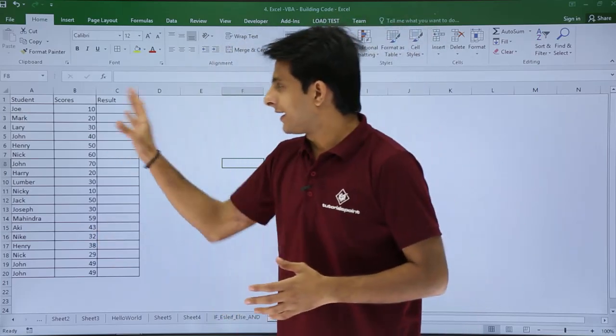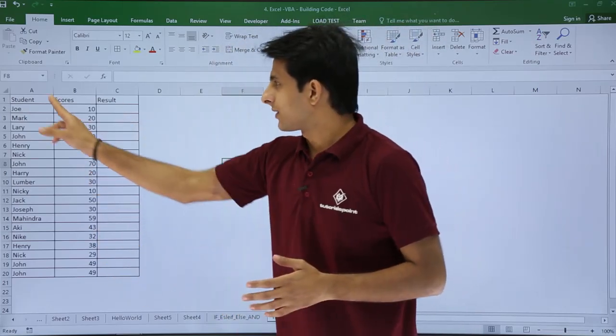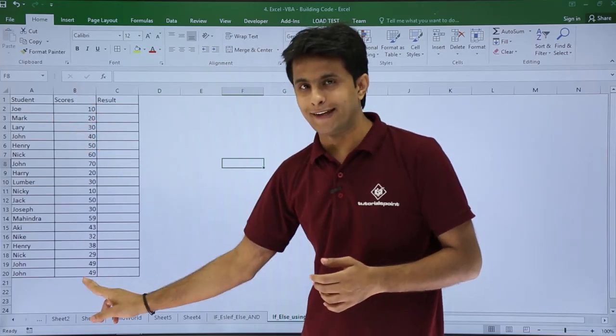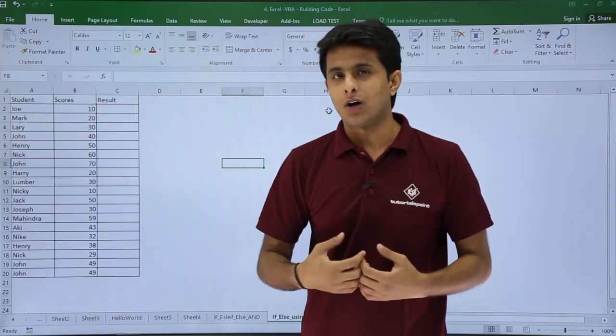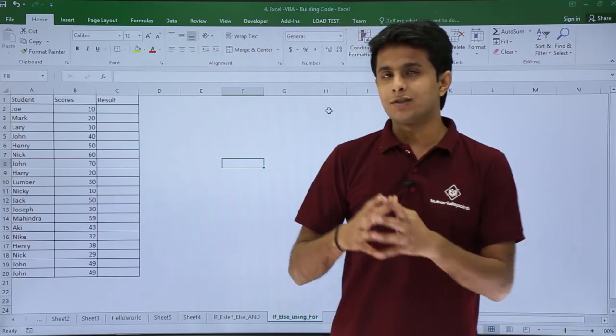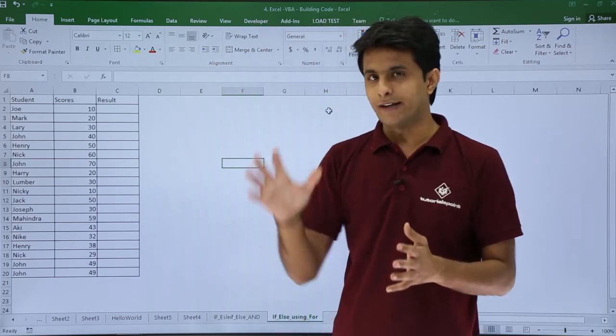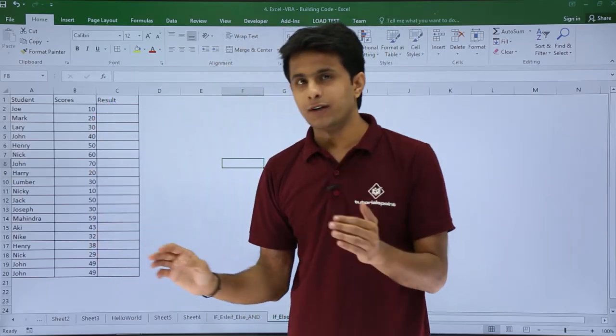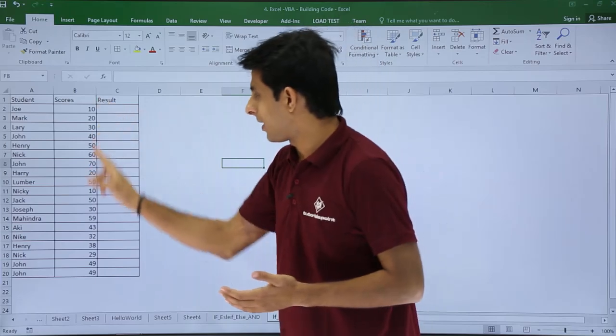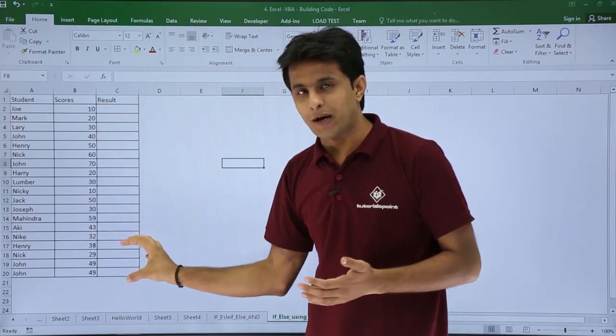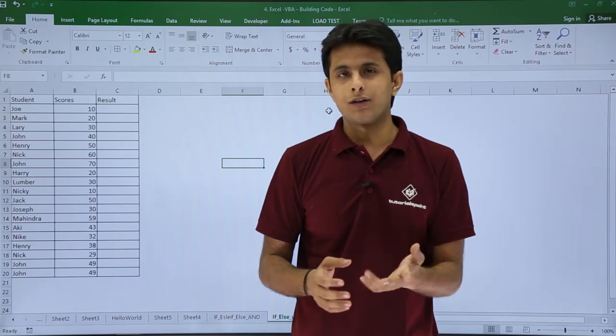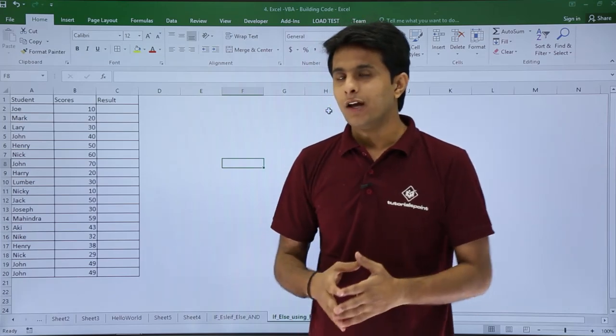These are the database, the student's course, names of the students, and the scores which students have got in the exam. This is my job to give the result as pass or fail. I'm a class teacher, an instructor of the students' entire class. I have to see whether students have scored marks above 35. If it is above 35, I'll give them as pass. If it is below 35, I'll give them as fail.